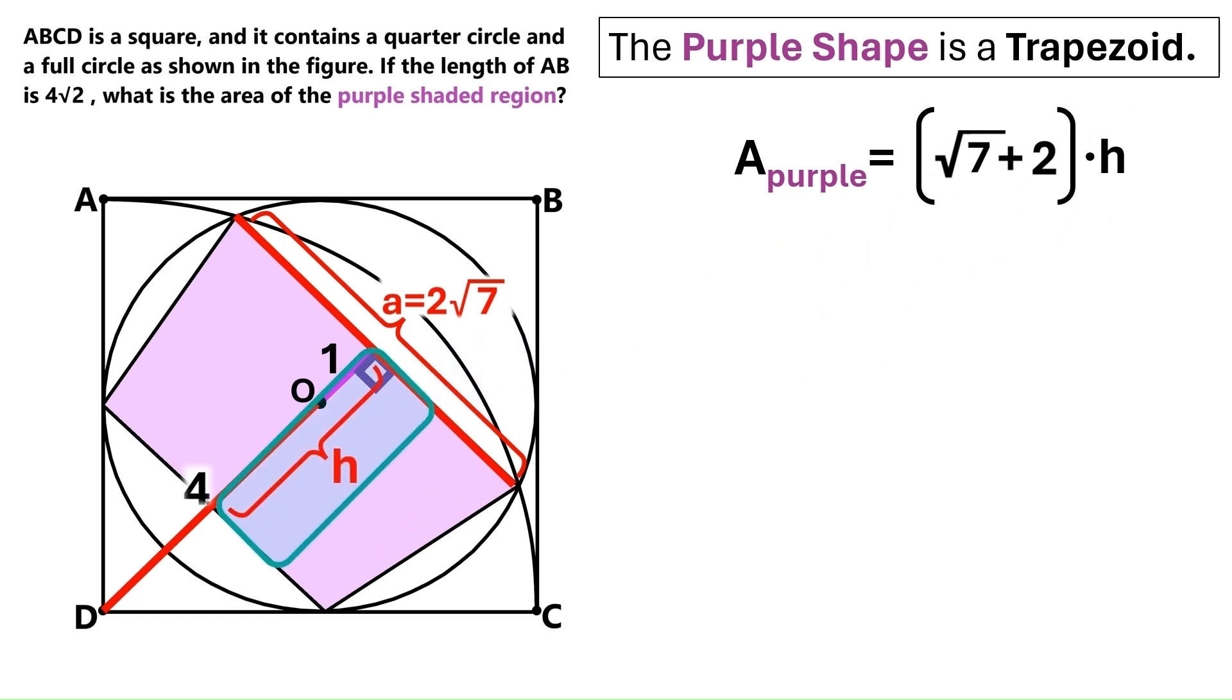And now the only thing we need to find is this h, which is the height of the trapezoid. And we already know that we have a square here. And this is its diagonal. Now we can draw another diagonal here. And it will cut this diagonal into two equal parts. And each part will be 2. And this distance is 1. That means we can add 1 and 2 to find that h is 3.